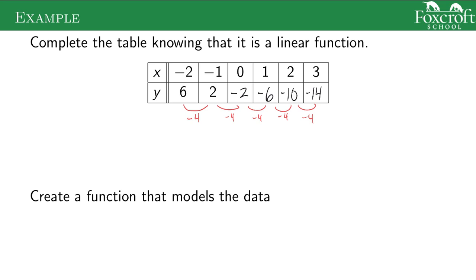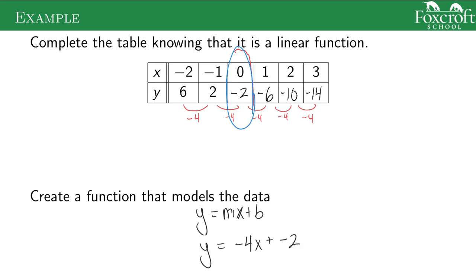What would our function be that models this data? We know linear equations are y = mx + b. The thing that we're adding is the same as the slope, so m is going to be negative four. B is our y-intercept, which is when x is zero — right in the middle here — and that's going to be negative two. So this is the table for the function y = -4x + (-2). You can check: if x equals three, negative twelve minus two is negative fourteen, which matches. So this is the function that models that table.